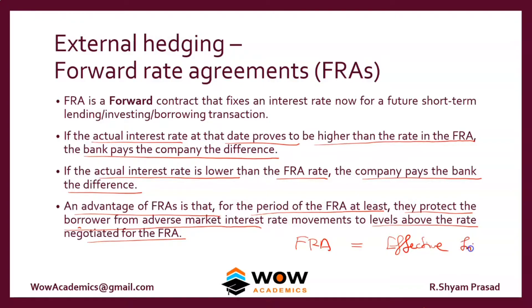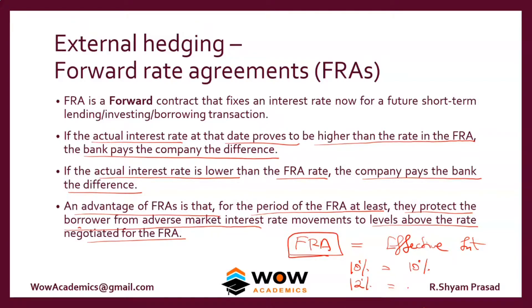Once you have taken an FRA, it is like booking in advance what interest rate you want to pay. If you buy a 10% FRA, your effective interest rate is 10%. If you buy an FRA for 12%, your effective interest rate is 12%. That is the essence of FRA contracts.